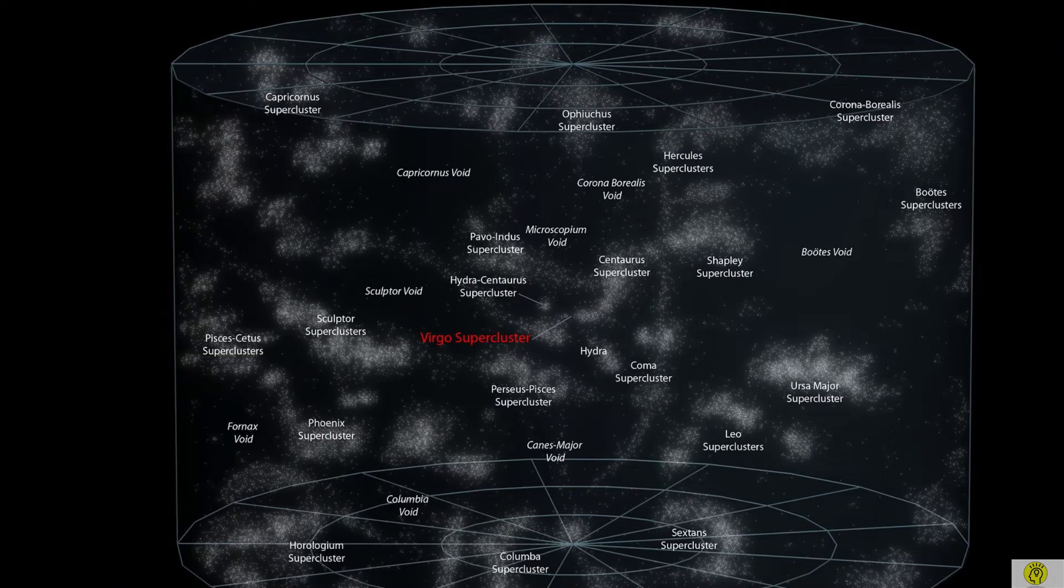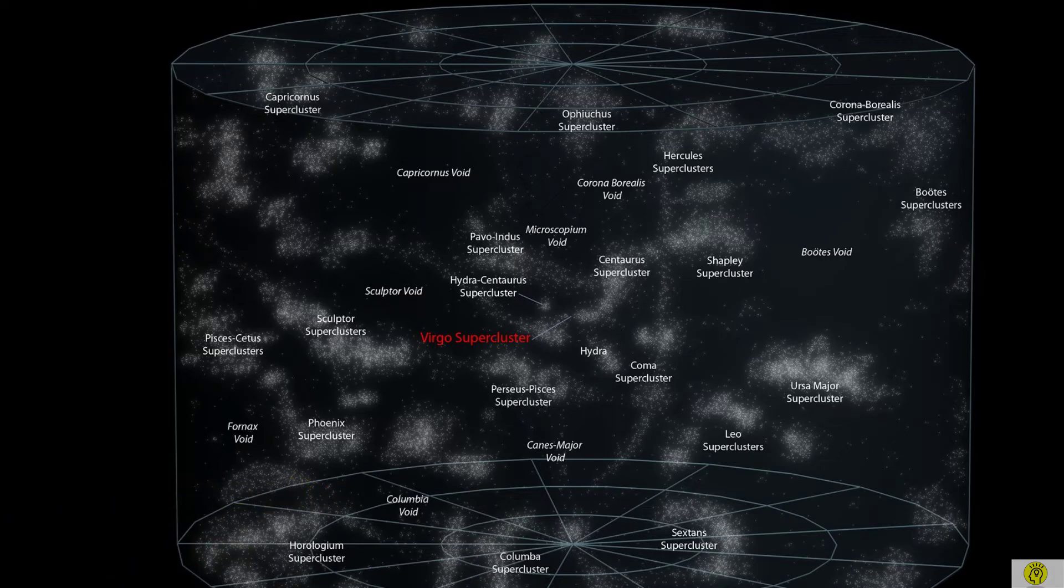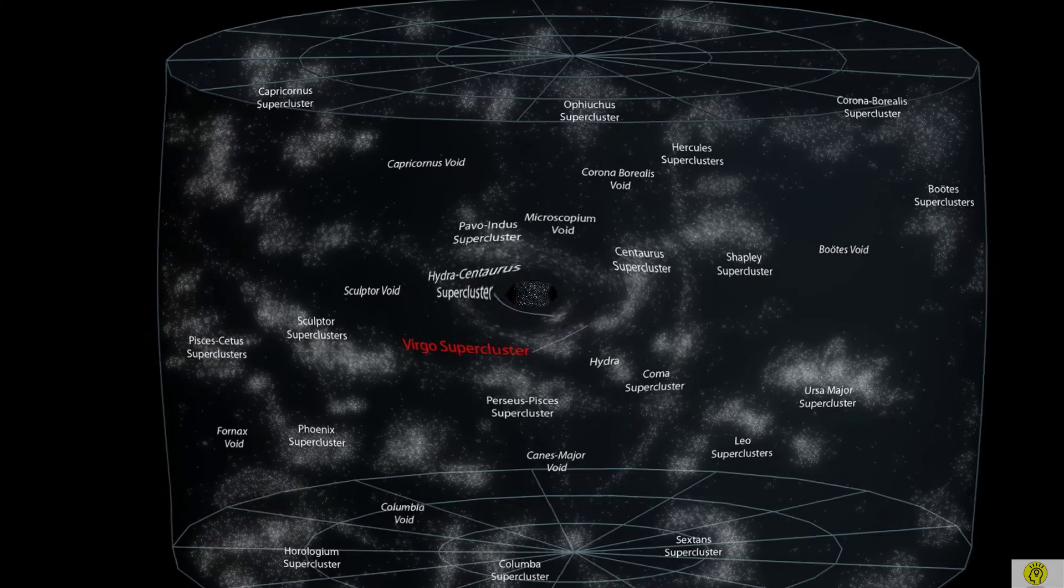We call this organizational level the local galactic group. In this graph you can identify Virgo Super Cluster at the middle. Next if we explore outside local galactic group,